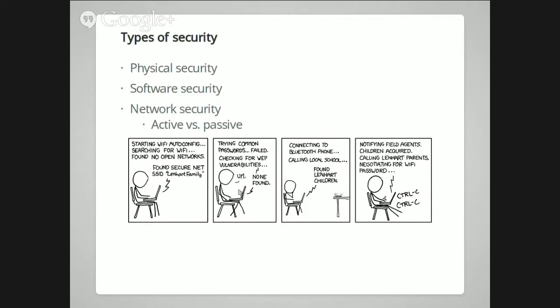And then there's network security. You can have either active or passive enemies. Someone might just be sitting there listening to all the traffic that goes across the network — can they do bad things with the information they've gained? Or someone might actually step in and pretend to be someone they're not, or try to take your server down with an attack like DDoS.